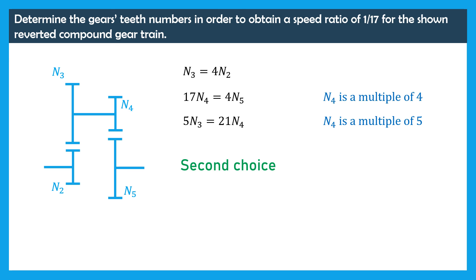Now we are ready to make our second choice. We consider that N4 is equal to 20 teeth. Using the second equation we have N5 is equal to 17 times 20 over 4, thus N5 is equal to 85 teeth.